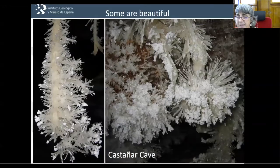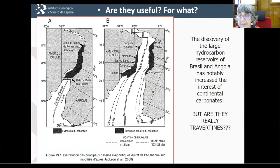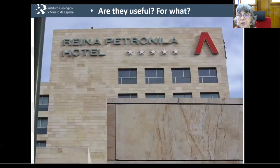Some of these carbonates are really beautiful. This speleothem from Castañar cave in Spain has different mineralogies — from aragonite, calcite, dolomite, and antite — and is really beautiful. Recently, continental carbonates have become fashionable because of the discovery of the reservoirs of Brazil and Angola, the so-called presalt. Although really they were studied because they were thought to be travertines — but who knows what they are? This was good because a lot of people started working on continental carbonates and a lot of progress has been made.